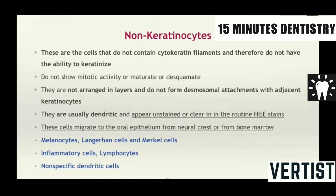Apart from the keratinocytes, there are some cells which are called as non-keratinocytes. The oral epithelium has two types of cells: keratinocytes and non-keratinocytes. The non-keratinocytes do not contain any cytokeratin filament. They are not able to keratinize. They do not show mitotic activity or mature or desquamate. They are not arranged in layers like the other basal cells. They do not form desmosomal attachments to the adjacent keratinocytes. And there are some dendritic cells which appear clear in hematoxylin and eosin staining. These cells migrate to the oral epithelium from the neural crest or the bone marrow. So these are the melanocytes, the Langerhans cells, the Merkel cells, inflammatory cells, lymphocytes, and non-specific dendritic cells.